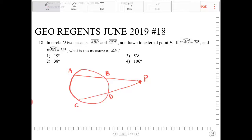If arc AC is 72, okay, so that's this arc on the outside, and arc BD is 34, what is the measure of angle P?